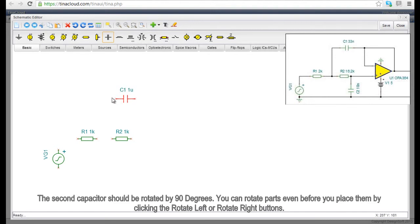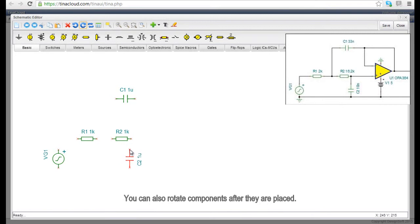The second capacitor should be rotated by 90 degrees. You can rotate parts even before you place them by clicking the Rotate Left or Rotate Right buttons. You can also rotate components after they are placed.